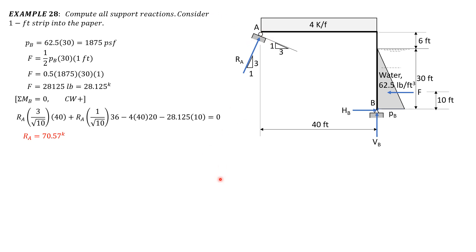Then VA equals 70.57 times 3 over square root of 10. So vertical component of reaction at A is 66.95 kips upward. Then horizontal reaction at A is 70.57 times 1 over square root of 10. So it is 22.32 kips rightward.